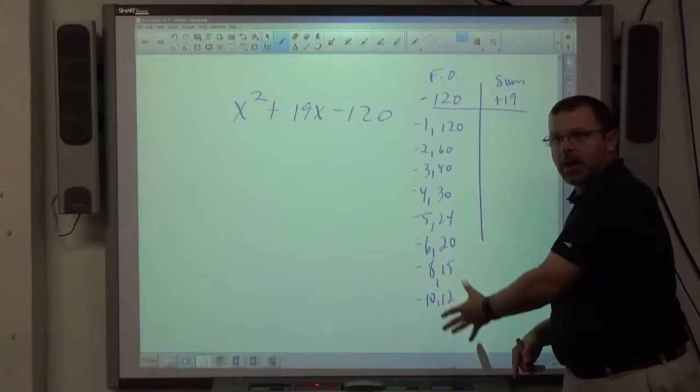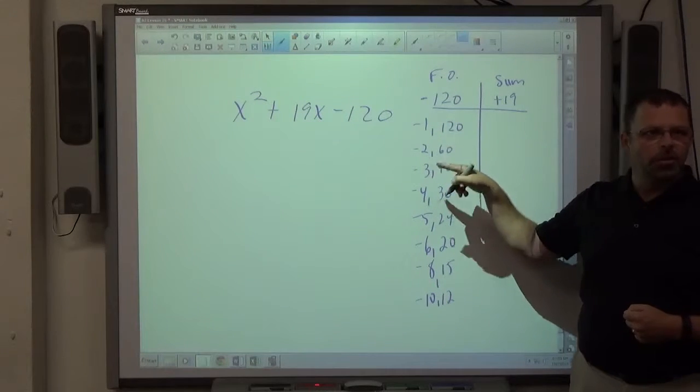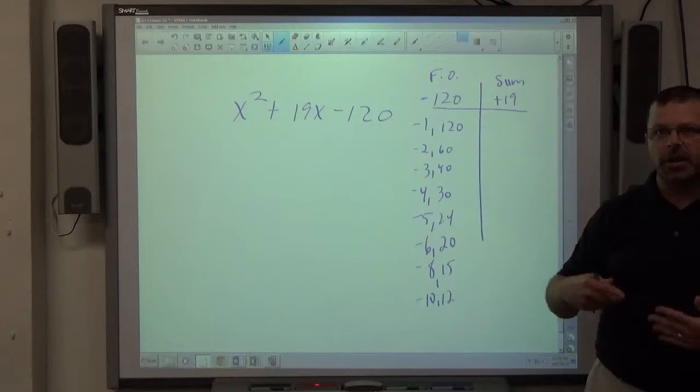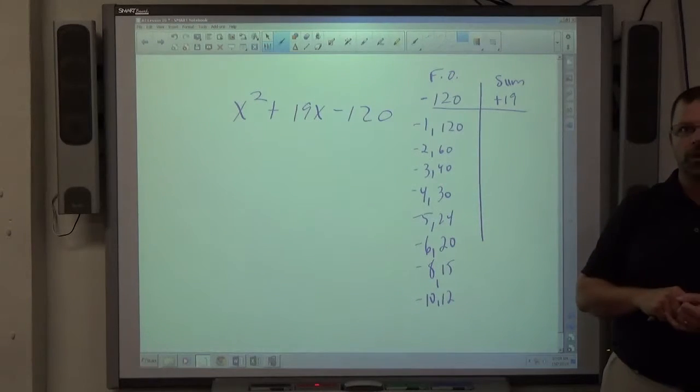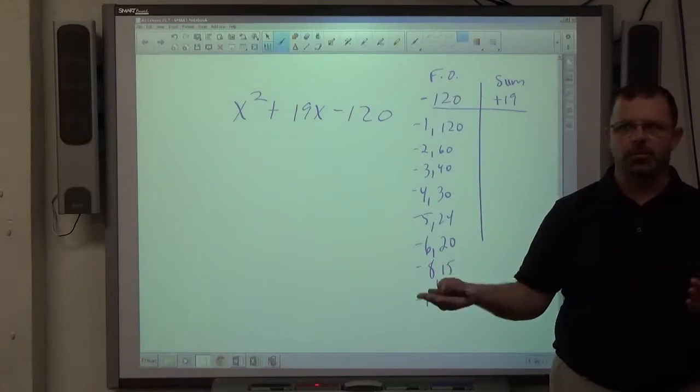So just like that, we compile this really long list. Again, try 1, then 2, then 3, then 4, and again, if you can't divide them in your head, use a calculator. 120 divided by 5 equals 24, 120 divided by 6 equals 20.